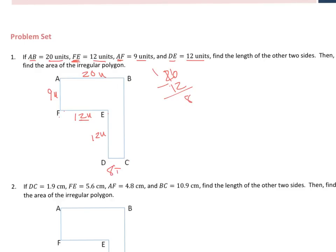So DC is 8 units, because 12, this line, plus this, equals this. So 12 plus 8 will get me the 20. And I'm going to erase that so I have more space.